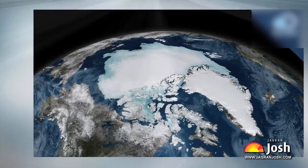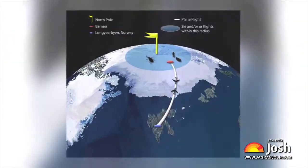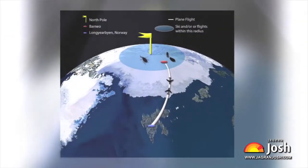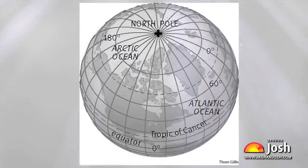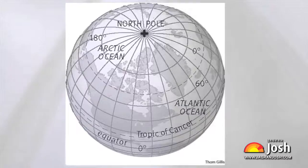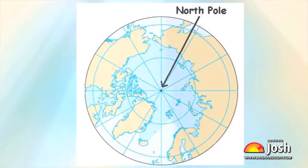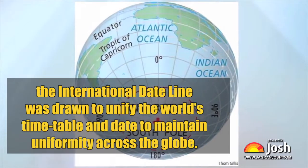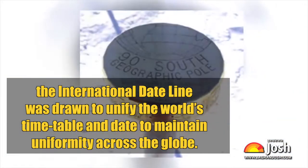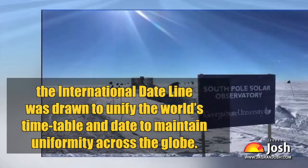In other words, if a traveller is crossing the date line from east to west, he or she loses a day, and while crossing the date line from west to east, he or she gains a day. But if this happens on the same landmass, then the same place will have a different date on the same day. Therefore, the international date line was drawn to unify the world's timetable and maintain uniformity across the globe.